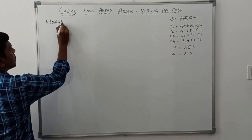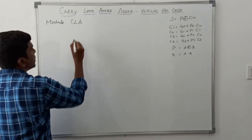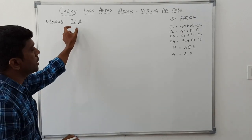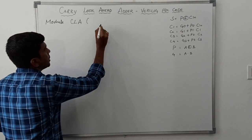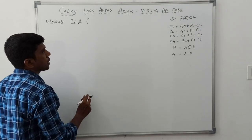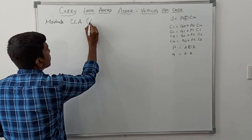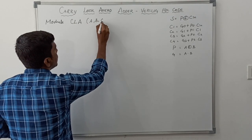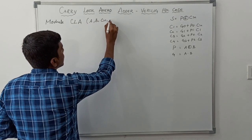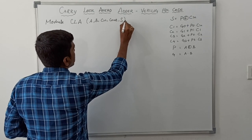Now I write the module. The module name is carry lookahead adder, CLA. I declare the input and output variables. Input variables are A, B, and CIN. Outputs are COUT and SUM.